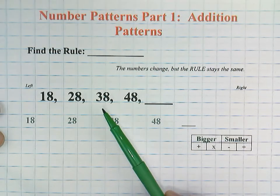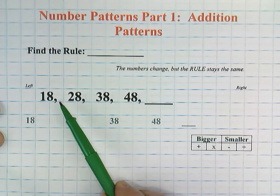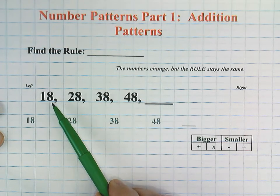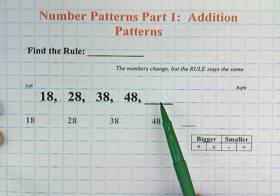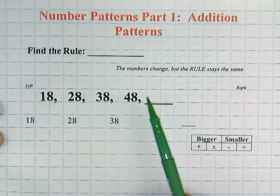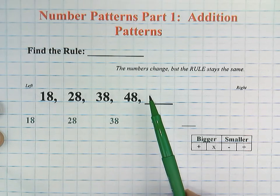Addition patterns involve a series of numbers. For example, here we have 18, 28, 38, 48, and then you see the blank. Typically we go from left to right unless the direction says otherwise.